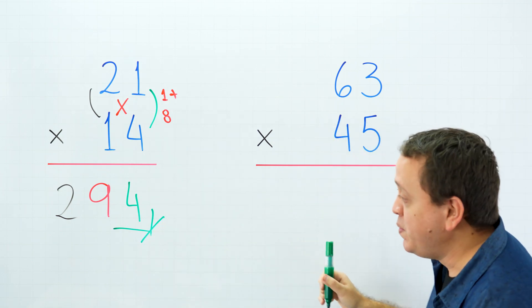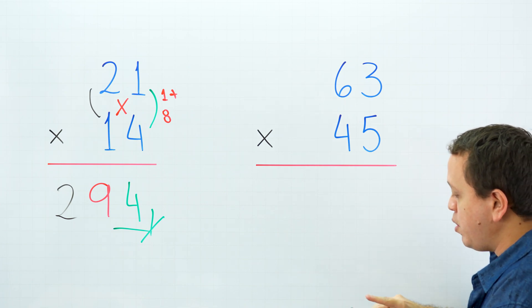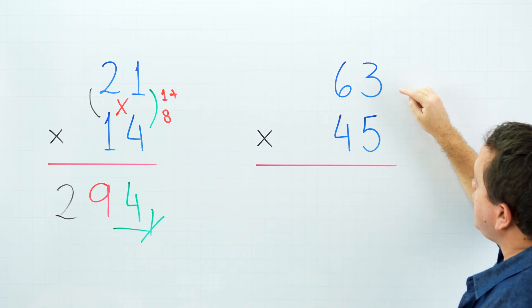Let's move to the second example. This time we got a multiplication with carry. Here we have 63 times 45.